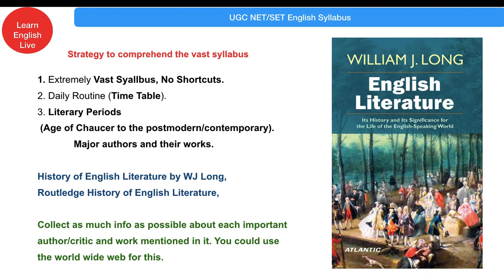For this I recommend one very important book: William J. Long's English Literature: Its History and Its Significance for the Life of the English Speaking World. The second book I recommend for history is the Routledge History of English Literature. There are other books like David Daiches but it's very long, so I recommend NET aspirants these two books. Collect as much information as possible about major authors and their major works from these books and internet sources.